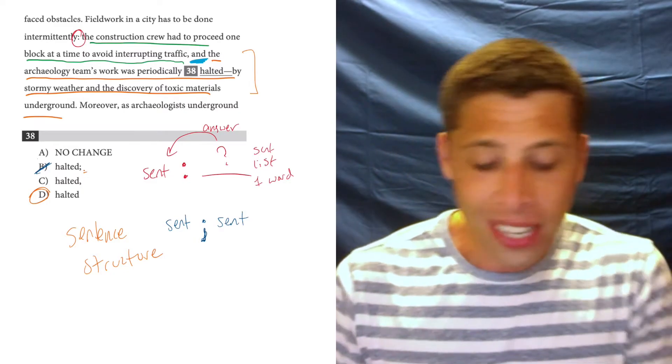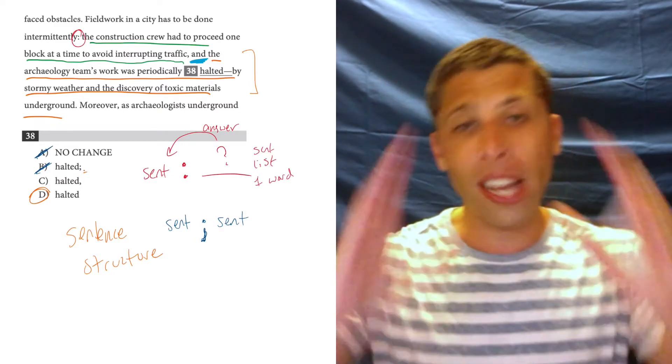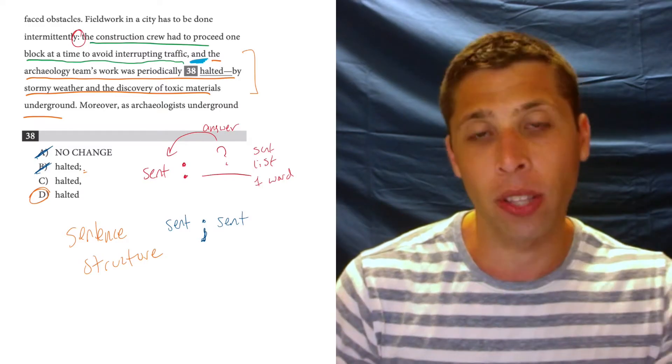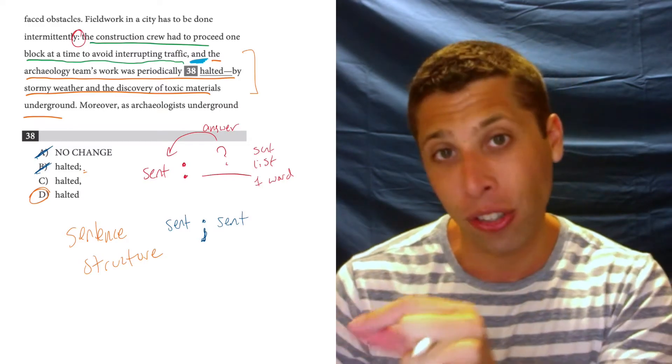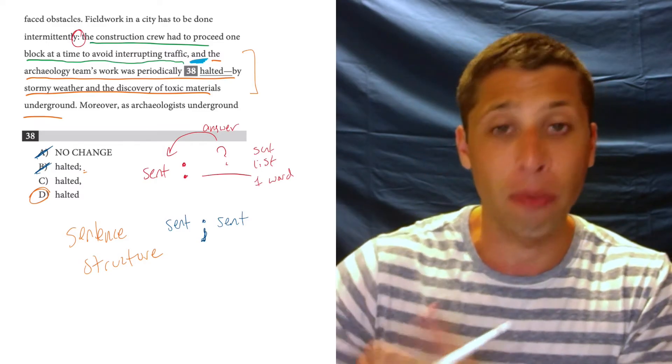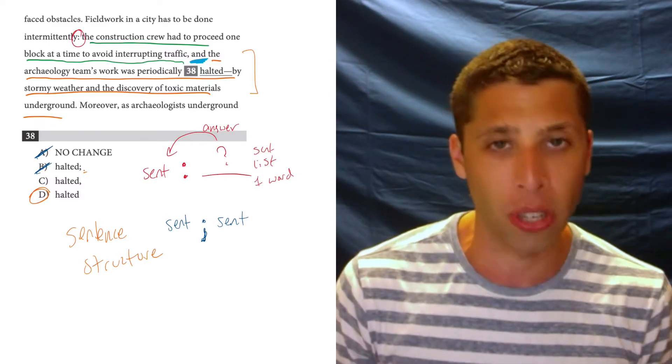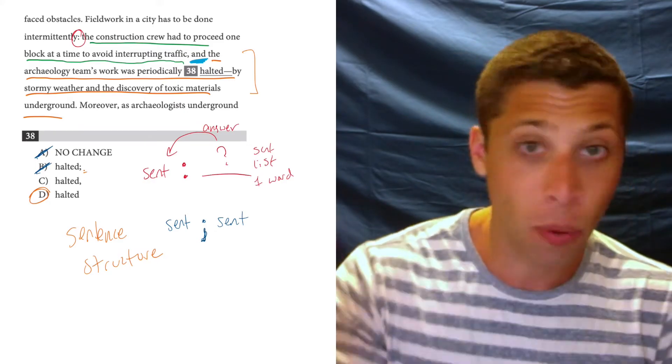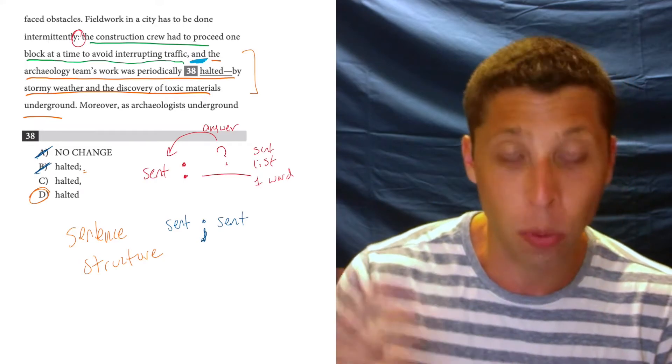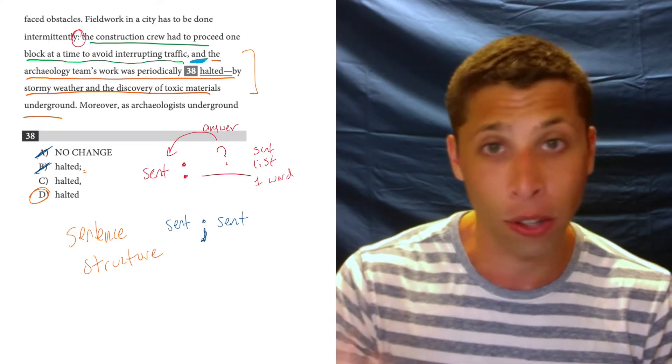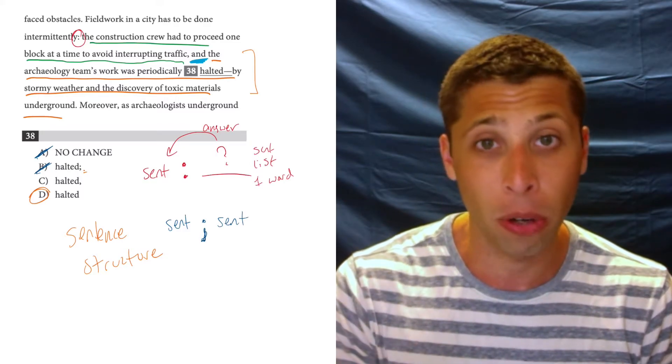And for the same reason, a dash isn't going to work either. A dash is this big break and we're not breaking here. We're continuing the thought. The clause that you want to attach is attached, is just about the thing that came before. It's not some separate interruption idea. It's a continuation of explaining why it was halted and what that meant. So we want to keep those ideas together, not separate them with a big punctuation mark like a semicolon or a dash.